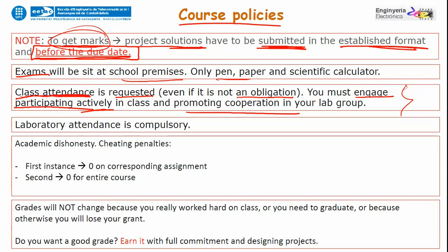Laboratory attendance is compulsory — you get marks for being in the lab. If you are not there, your group will not work properly and you will be penalized. Regarding academic dishonesty: if you are caught cheating or copying exams, exercises, or projects, the first offense results in a zero. A second offense means failing the entire course.